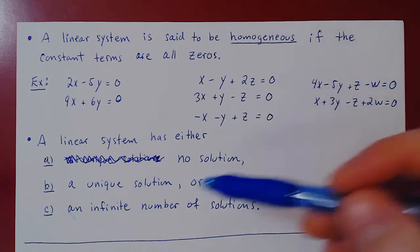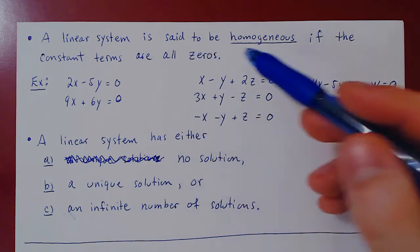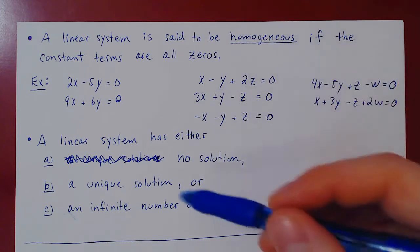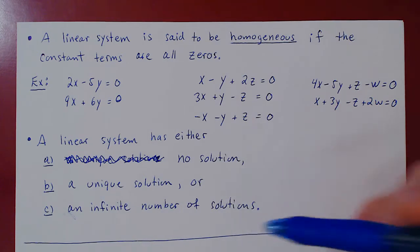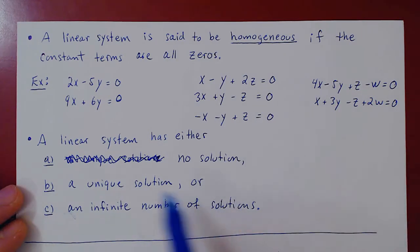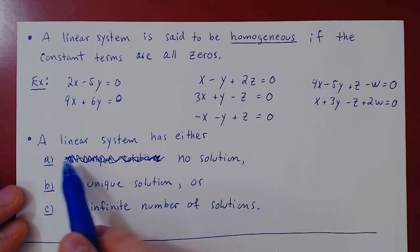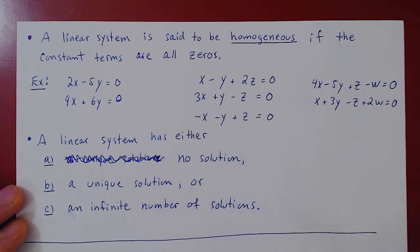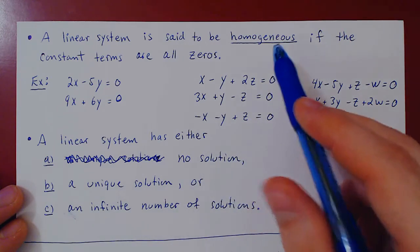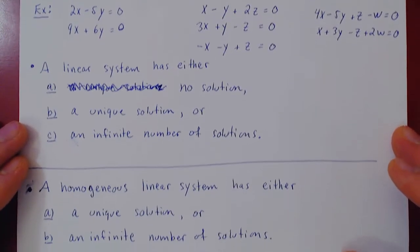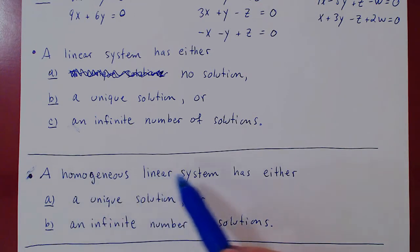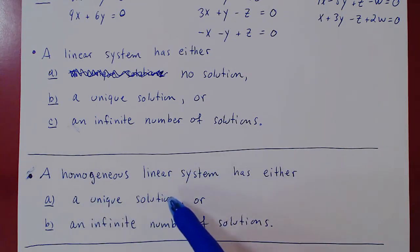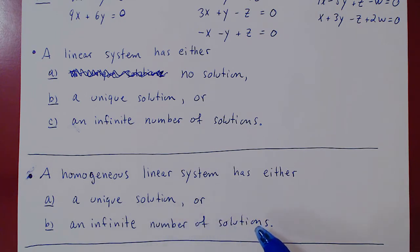You may ask: what if we have a homogeneous linear system? Can we perhaps simplify this theorem? The answer is yes. We can eliminate the possibility of no solution in the case of a homogeneous linear system. So a homogeneous linear system has either a unique solution or an infinite number of solutions.